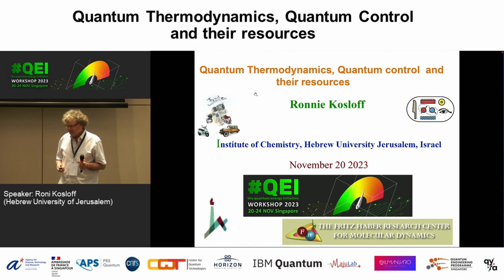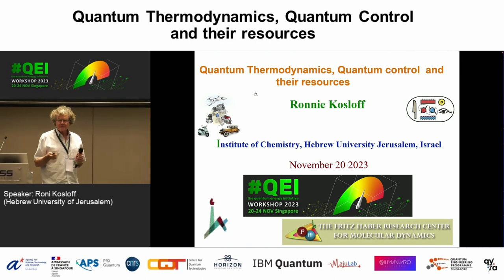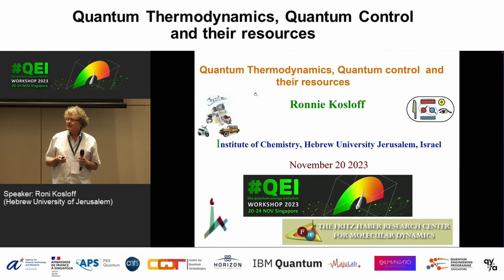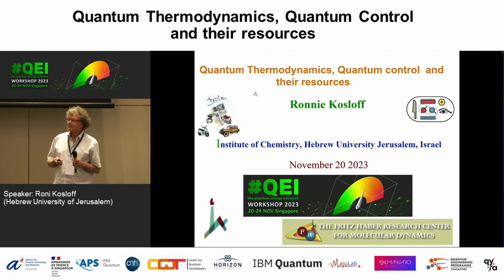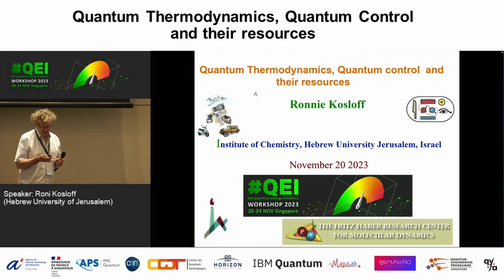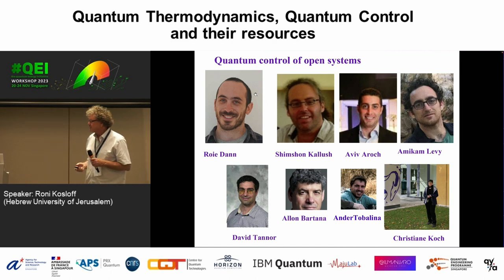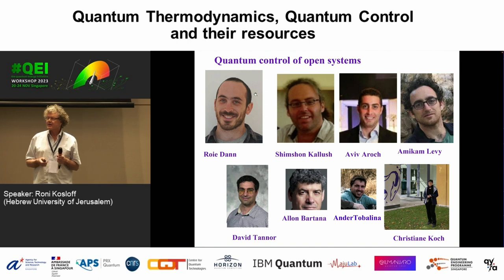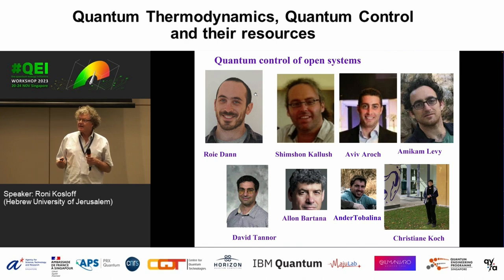I started with a few slides, listening to Alexia and trying to put things in perspective. I'm going to talk about the relation between quantum thermodynamics, quantum control, and the resources that are needed. These are people I've been working with: Rohi Daan, Shimshon Kalush, Aviv, and Amikam Levi. This is the team I've been working with recently, more on control.